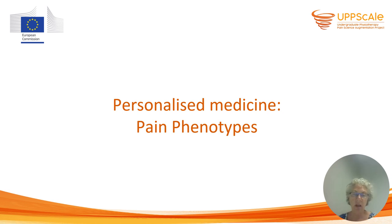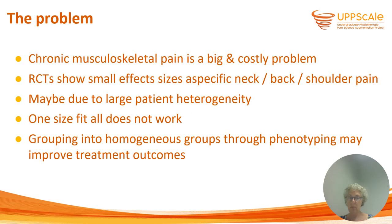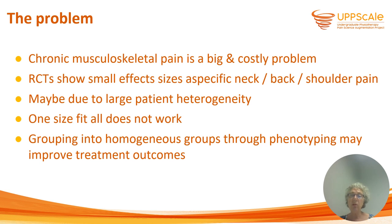My name is Harriet Wittink and I want to tell you about pain phenotypes in personalized medicine. Chronic musculoskeletal pain is on the rise — as the population gets older we see an increase in musculoskeletal pain. It's a very costly, very big problem, and to date the effect sizes from randomized control trials that have been conducted are small. That may be because of patient heterogeneity, so it may be worthwhile to look for subgrouping to see if that leads us to better treatment results.